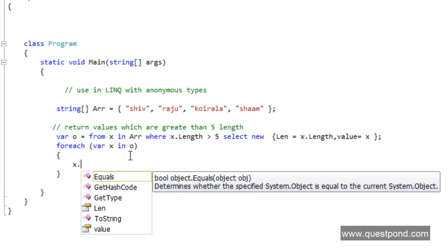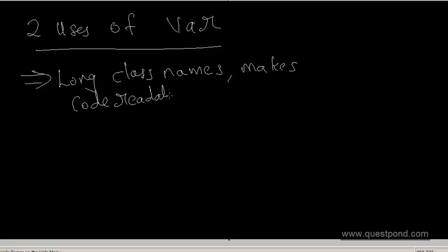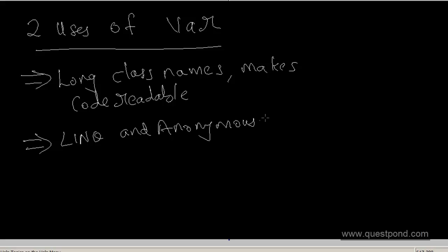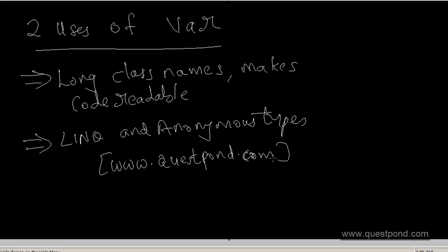Two big important places where you can use the var keyword: first is with LINQ and anonymous types; second — which is a rare situation — is when you have class names which are big in length. To summarize: var is not really useful for primitive data types like integers, strings, booleans, etc. On the internet there are so many examples of var with primitive data types, which overshadows what var is really used for. It has two primary uses: when you have big class names making your code unreadable, and when you are dealing with LINQ and anonymous data types. I hope you've enjoyed this tutorial and are now in a better position to make a choice of when to use var and when not to. Thank you very much.